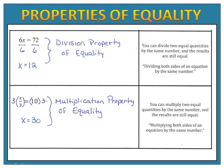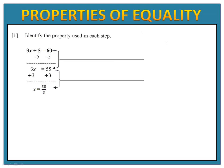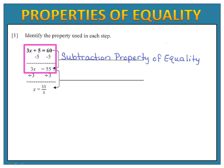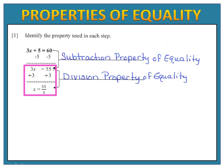These properties allow us to justify the things we do when solving. For example, in the first step we subtracted five from each side — that's the subtraction property of equality. Then we divided both sides by three — that's the division property of equality. Because of those properties, we know x equals 55 thirds. If you put 55 thirds in place of x, you would have a true number sentence.